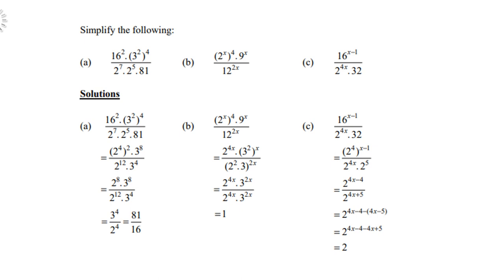Example C: 16 is 2 to the power 4, so be careful — it becomes 2 to the power 4x minus 4, not 4x minus 1. And 32 is 2 to the power 5. So we get 2 to the power 4x minus 4 over 2 to the power 4x plus 5. Both 4x terms cancel and negative 4 plus 5 gives 1, so the answer is 2 to the power 1, which equals 2.